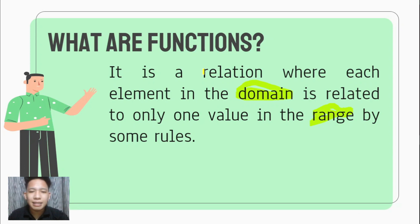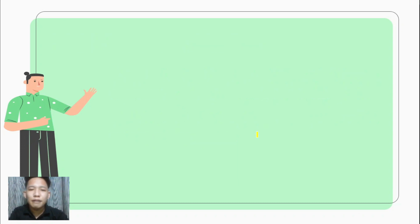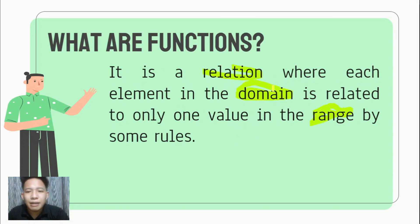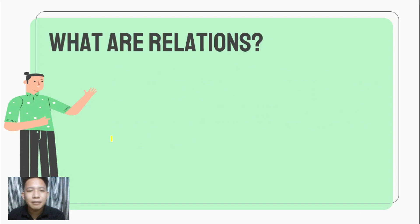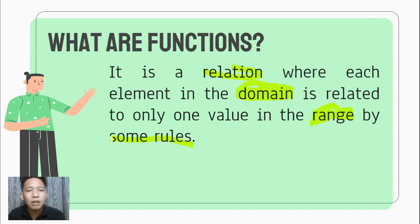It says here that a function is a relation. A relation is a rule that relates values from a set of values called the domain to a second set of values called the range. The difference between relations and functions is that a relation does not have restriction, while a function relates domain to range by some rules.